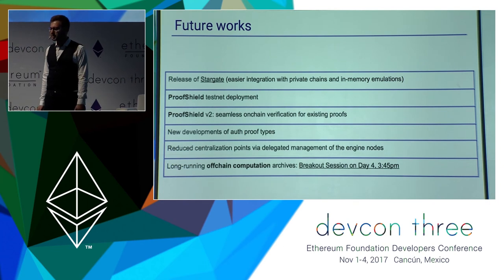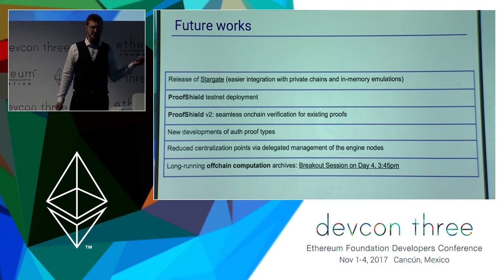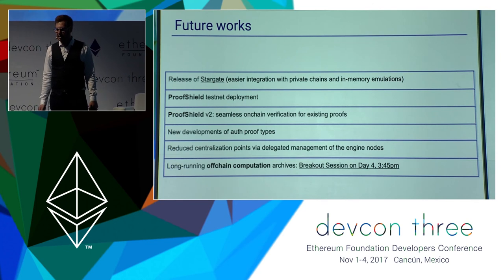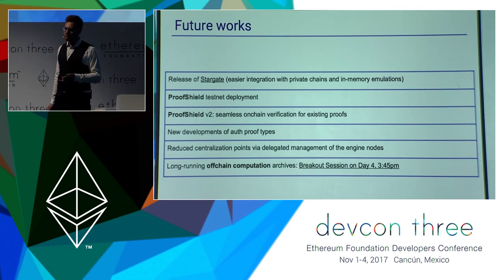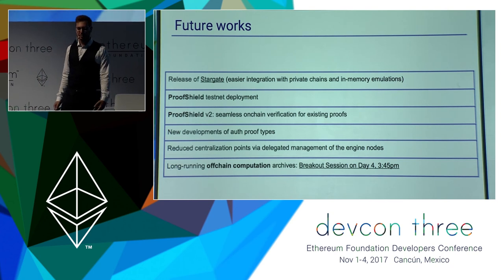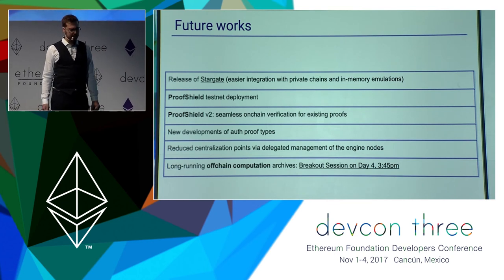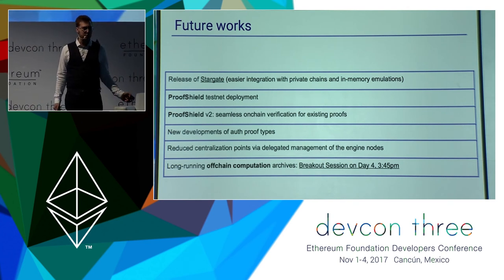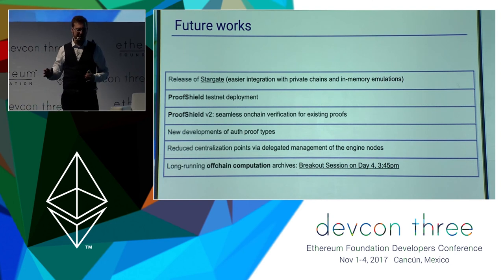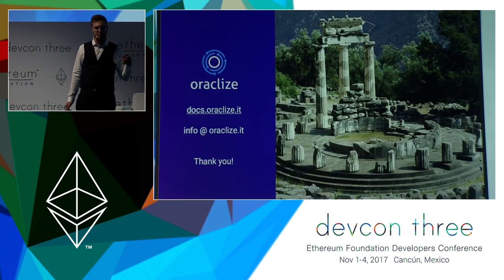Looking ahead, we will facilitate with Stargate the use in private chains and for in-memory executions and simulations. The Proof Shield testnet deployment and version 2 are in the workings, along with new authenticity proofs and reduced centralization by delegating management of machines to external nodes. Tomorrow downstairs in the breakout hall at 3:45 PM, I will do a deep dive around Oraclize off-chain computations — using the same technologies and trust model to execute off-chain any piece of code and send the result on-chain, including non-deterministic pieces of code. Thank you for your attention.